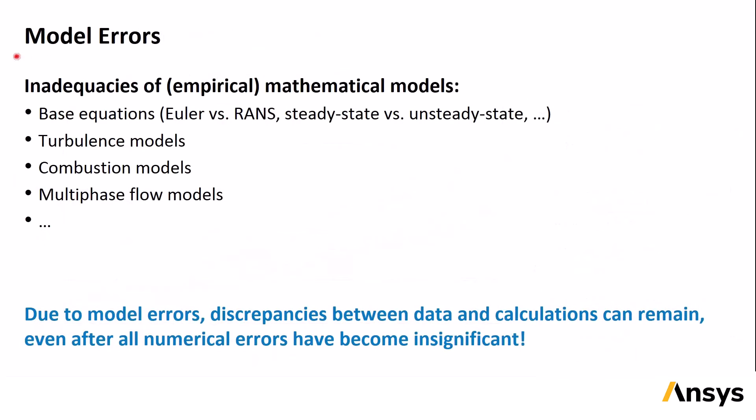The next kind of errors we will talk about is model errors. They result from inadequacies of the underlying, sometimes empirical mathematical models used to describe various physical processes included in the simulation. These can include inconsistencies of model equations, for instance, inviscid calculations using the Euler equations as opposed to turbulent flow calculations with the RANS model, or the inability of a given turbulence, or combustion, or multiphase model to completely accurately represent the physics of a given problem. Modeling errors are responsible for discrepancies between data and calculations that remain after all other numerical errors have been eliminated, but remember that these other errors should be eliminated before becoming very concerned with modeling errors.